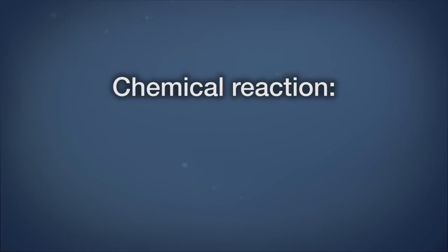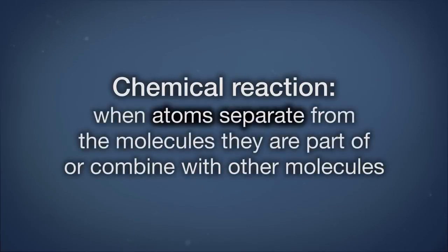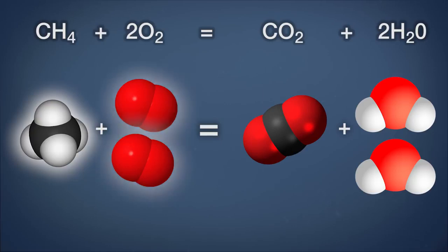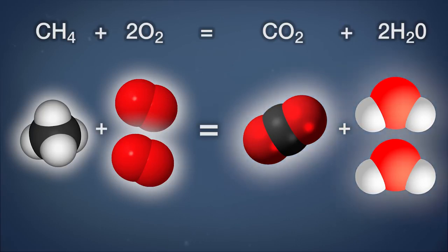A chemical reaction occurs when atoms separate from the molecules they are part of or combine with other molecules. For example, when methane, CH4, burns in the air, it combines with two molecules of oxygen, O2, to create one molecule of carbon dioxide and two molecules of water: CH4 + 2O2 → CO2 + 2H2O.